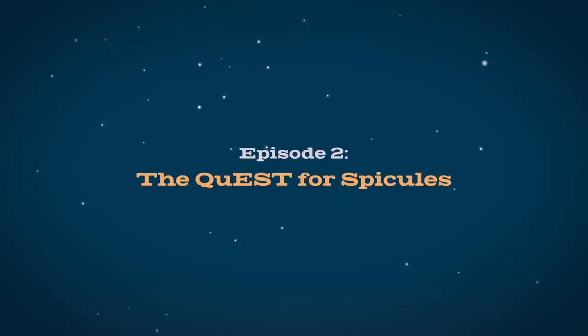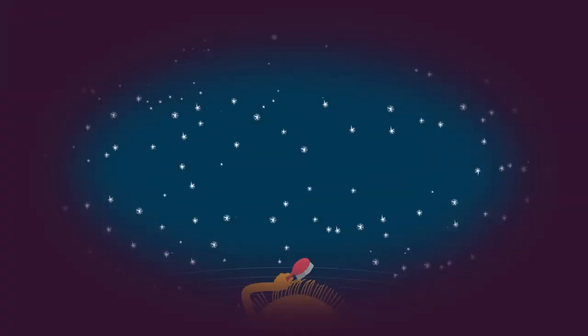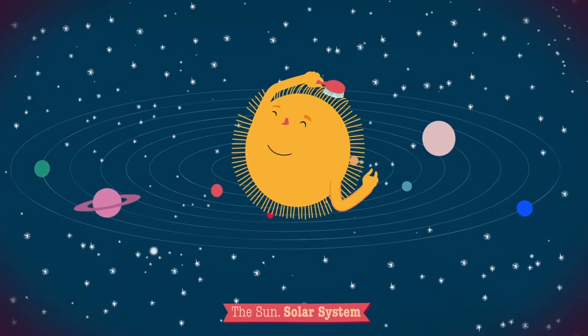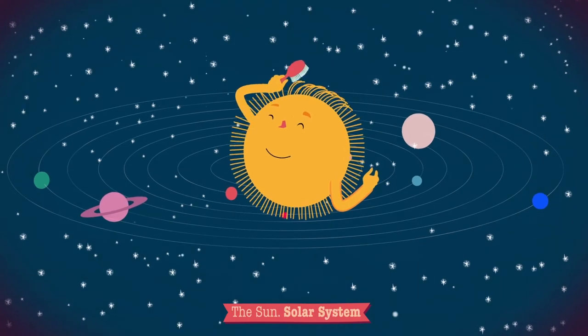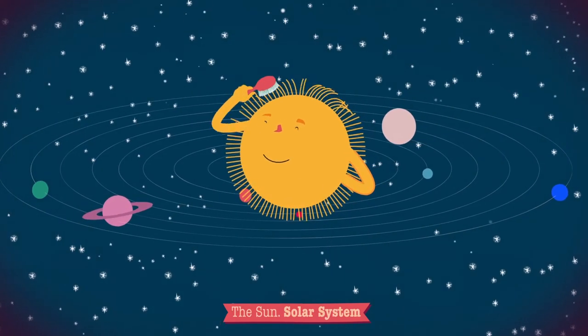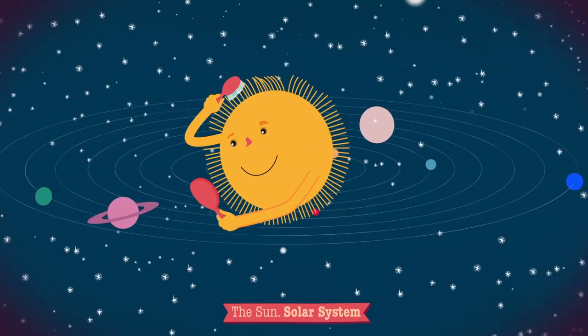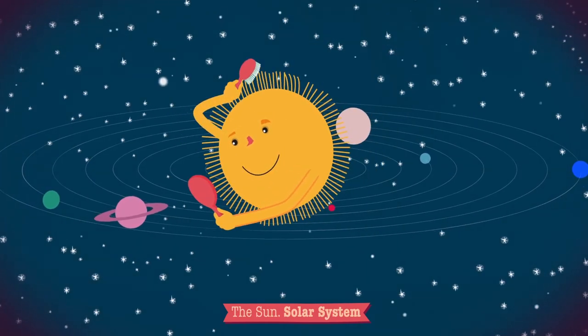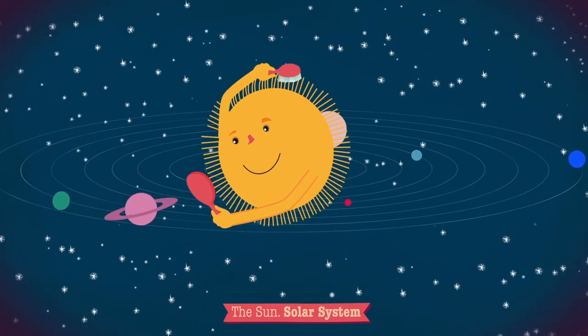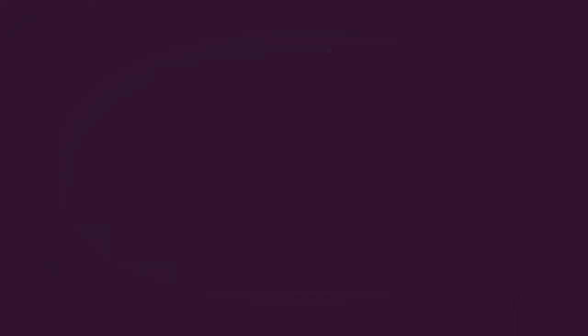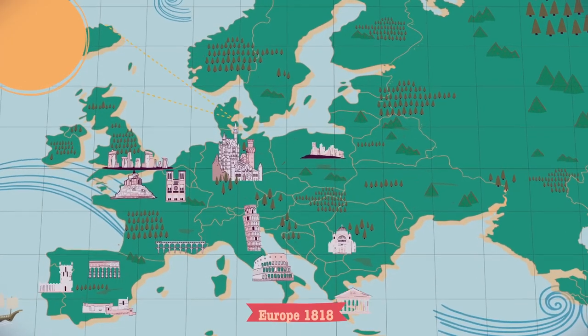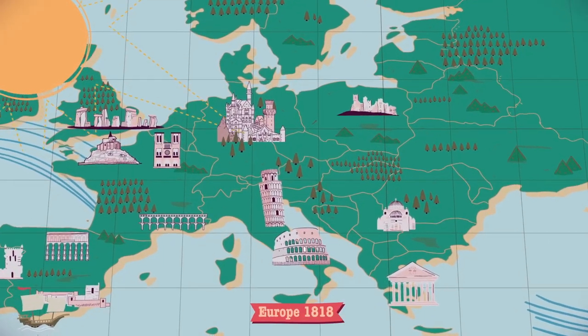Episode 2. En busca de las espículas. La superficie del Sol está llena de unas estructuras que se asemejan a briznas de hierba o cabellos, y se llaman espículas. Son chorros de gas confinados por los campos magnéticos de la atmósfera solar. Se descubrieron en Italia a finales del siglo XIX.